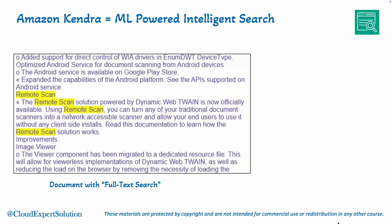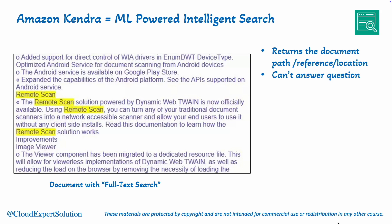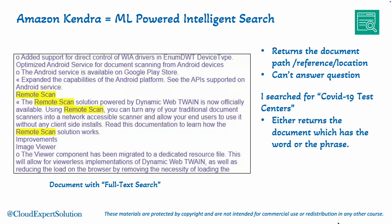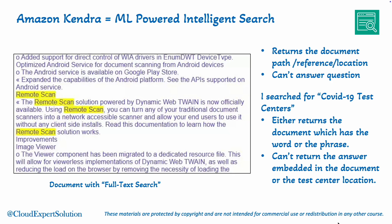The document search results sometimes look like this. The search result typically includes the document paths, references, or locations. However, traditional search engines have a significant limitation: they cannot answer specific questions. For example, if I search for COVID-19 test centers, a traditional search engine will return documents containing those words or phrases, but it won't extract or directly provide the locations of the test centers, even though the answer exists within the document.